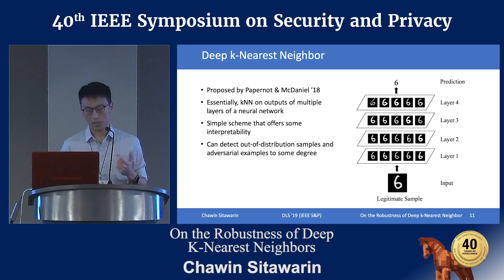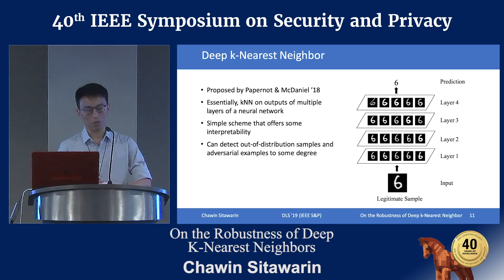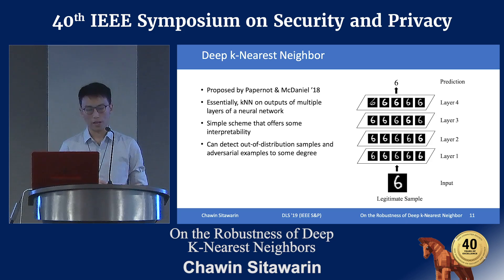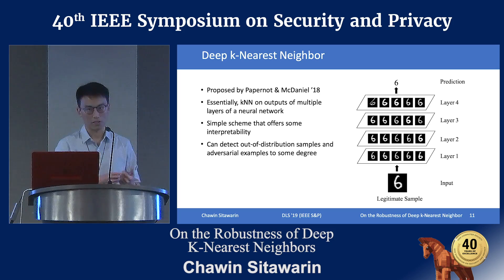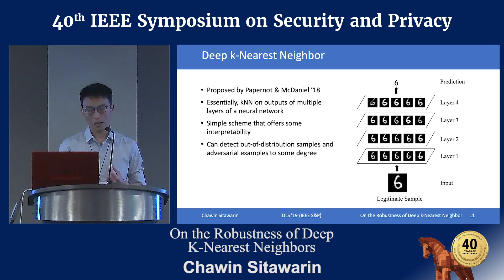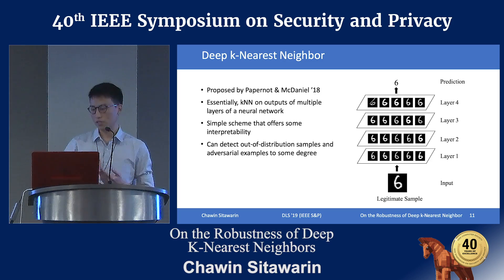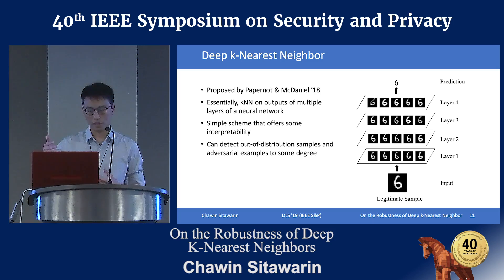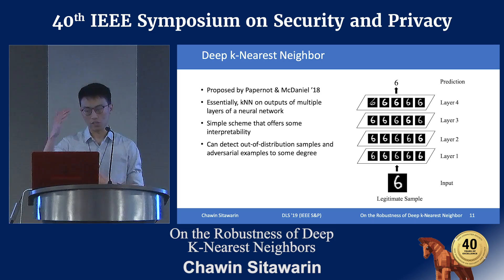Now we move on to our second part, which is attacking the Deep K-Nearest Neighbor. The Deep K-Nearest Neighbor is a scheme proposed by Papernot and Daniel last year. It is quite simple — just an extension of K-Nearest Neighbor. Previously we were doing K-Nearest Neighbor in the input space or pixel space for images; now instead we do K-Nearest Neighbor on the output of a neural network at all the layers. We illustrate this scheme with the diagram on the right: we have a network of four layers, get its output at each layer, and when we get input we pass it through and do the neighbor search at all of them. For this simple case, K is equal to five, so we get five neighbors at each layer.